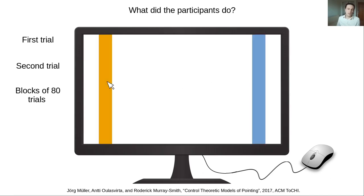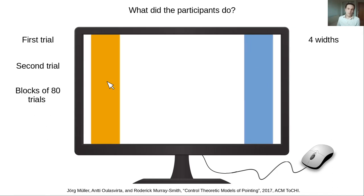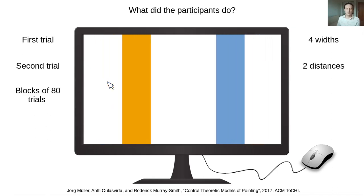The participants were tested on blocks of 80 consecutive trials. The experiment had two main variations: the width of the target regions was varied, as well as the distance between the targets. These combinations gave eight different conditions that were categorized based on their index of difficulty.